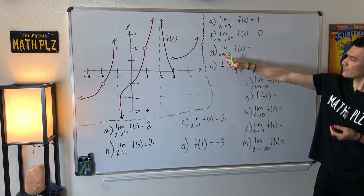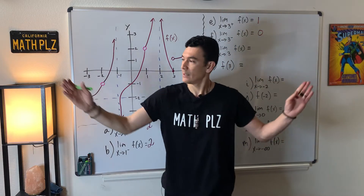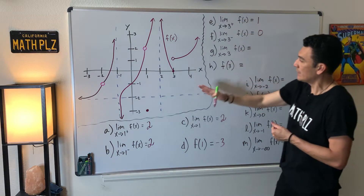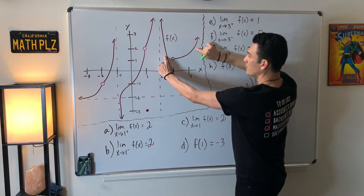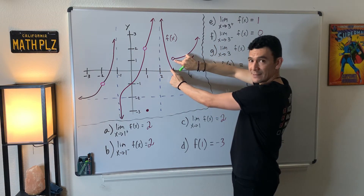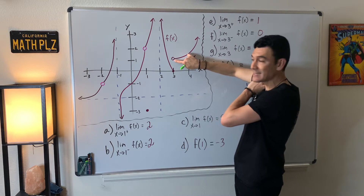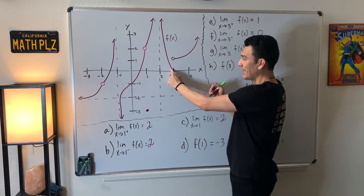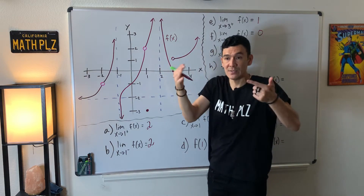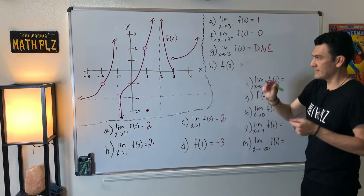How about part G? This says x approaches three with no direction specified, so we have to come at it from both directions. From the right the y coordinate was one, from the left it was zero — two completely different destinations. You can see my fingers don't end up touching. Since the one-sided limits disagree, the limit does not exist.